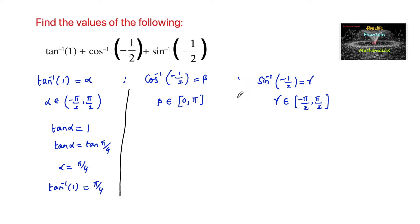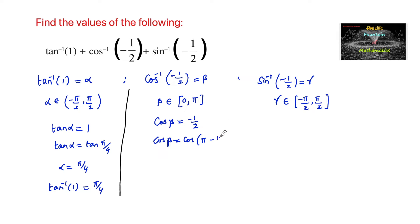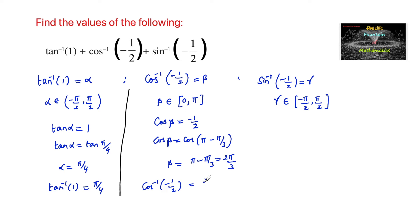For the next one, beta belongs to zero to pi and cos beta equals minus 1 by 2. Cosine is negative in the second quadrant, and since cos 60 degrees is 1 by 2, we write cos beta equals cos(pi minus pi by 3), which gives minus 1 by 2. So beta equals pi minus pi by 3, that is 2 pi by 3. Therefore cos inverse of minus 1 by 2 equals 2 pi by 3.